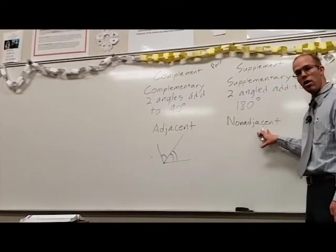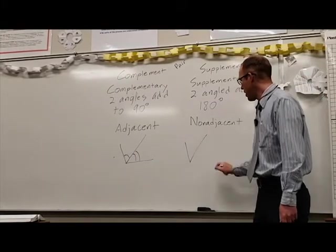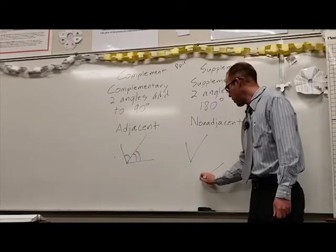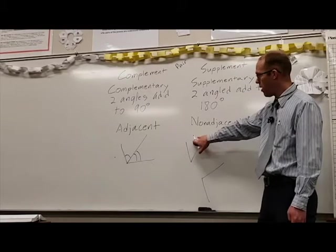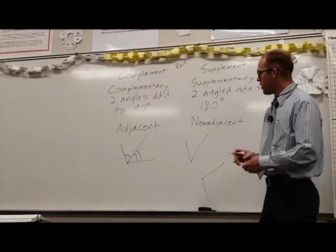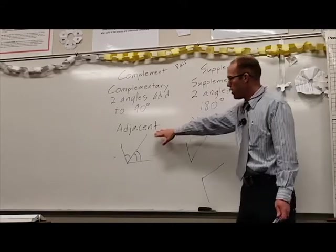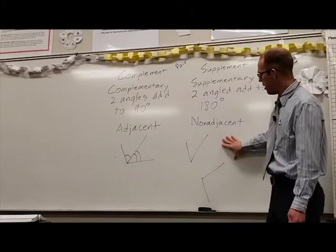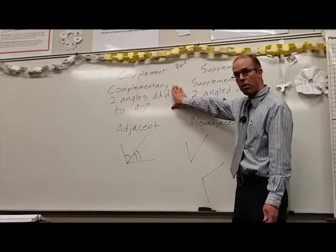Non-adjacent angles are angles that do not share a side. So if I had an angle here and a completely separate angle over there, these two angles are non-adjacent or not adjacent because they do not share a side. So complementary and supplementary angles might share a side and they might not as long as they add up to the appropriate measure.